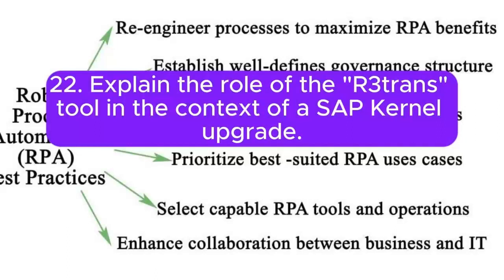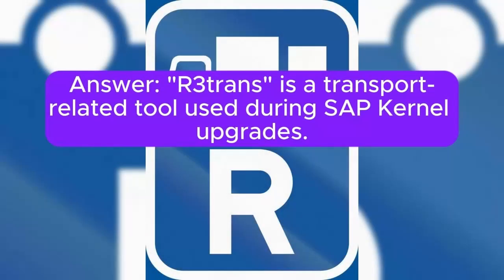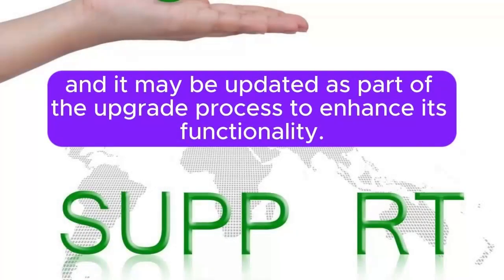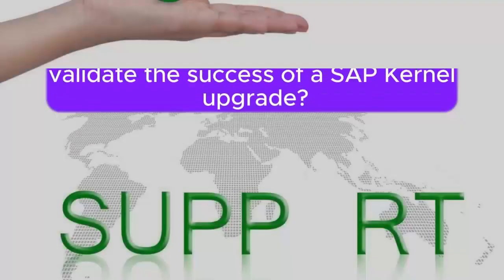22. Explain the role of the R3trans tool in the context of a SAP kernel upgrade. R3trans is a transport-related tool used during SAP kernel upgrades. It handles the transport of data between the database and the SAP system, and it may be updated as part of the upgrade process to enhance its functionality.